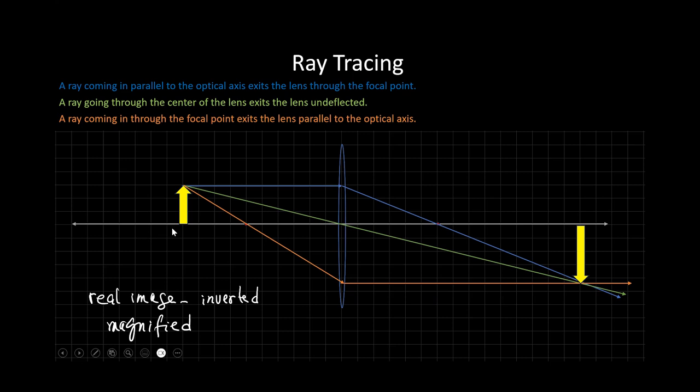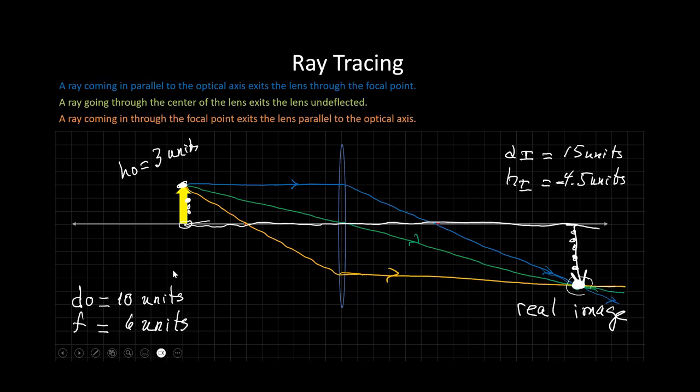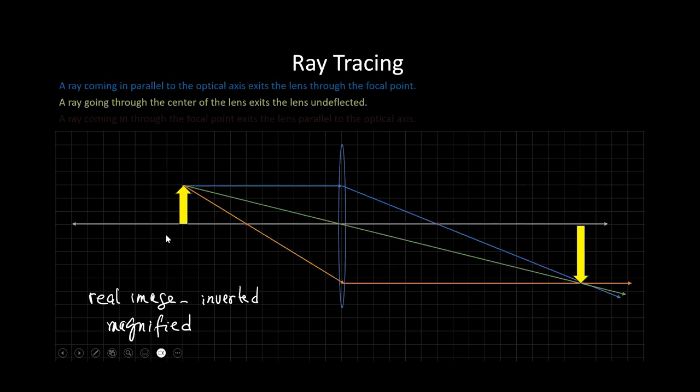Now, can we verify this? Can we get some matching results using the thin lens equation? So, let's go back and see what we have. We have DO is 10 units, and F is 6 units, and HO is 3 units. That's all that's given to us. DI and HI and the magnification, all of that has to be computed from these. So, let's go ahead and start doing that. Thin lens equation. Let's begin with that.